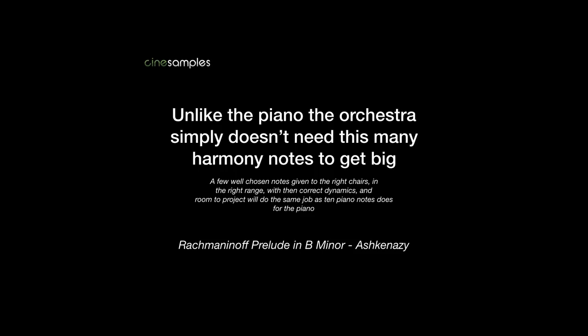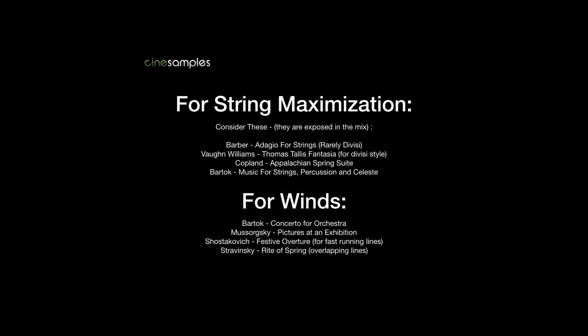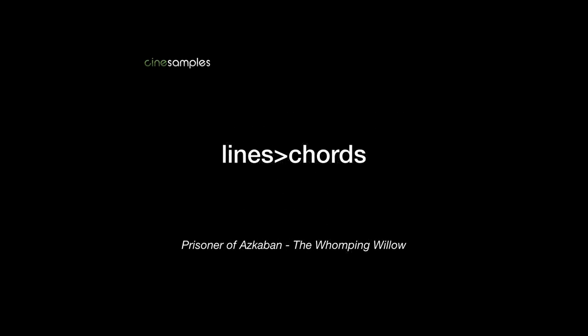Once you practice maximizing your brass, you will discover the other choirs can be maximized in similar fashion. So next time you are listening to a huge John Williams action cue, count how many independent parts are going on. Is that what is making the cue sound huge? Or is it the amount of bodies doubling the triads and bass notes? Hopefully you will come to the same conclusion I have: voice maximization and part writing is the way to make the orchestra thrive. Thanks for watching.